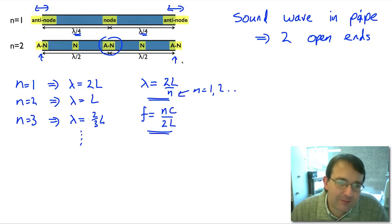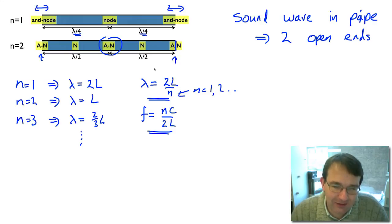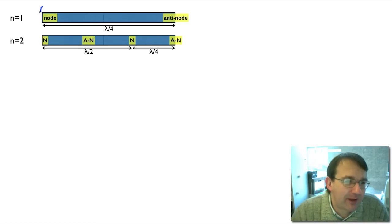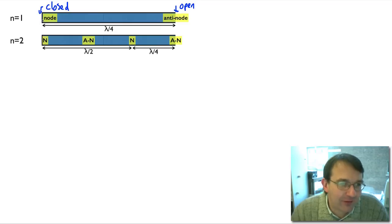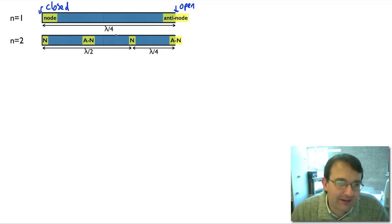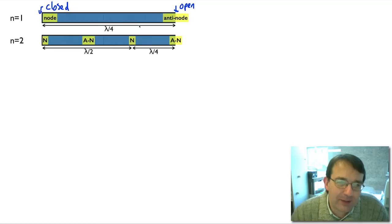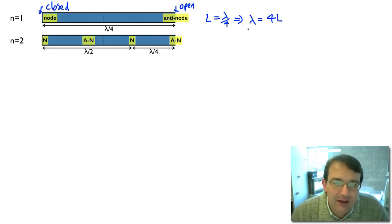But we can do something different with a pipe — suppose we close one end. With an open end and a closed end, at the closed end the air molecules cannot vibrate at all, so we must have a node there. The open end, again, has an antinode. Since we've got a node at one end and an antinode at the other, in the longest wavelength case there's no node or antinode in between. The length L equals lambda over 4, so lambda equals 4 times the length of the pipe — a wavelength four times longer than the pipe.